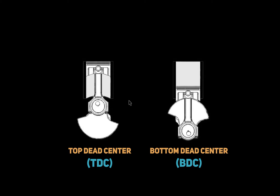So as we see right here, we have the combustion chamber, the piston, the connecting rod, and the crankshaft. The top dead center, or what is also referred to as TDC, is the point where the piston is at the highest point in the cylinder, which would be right about there.